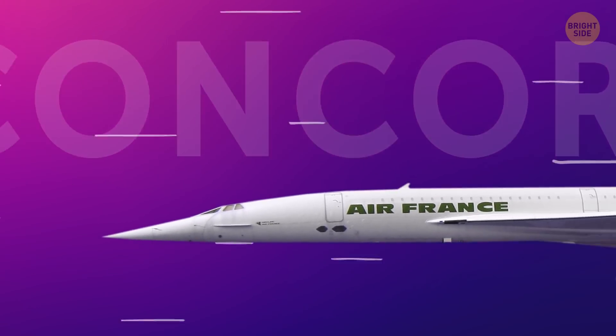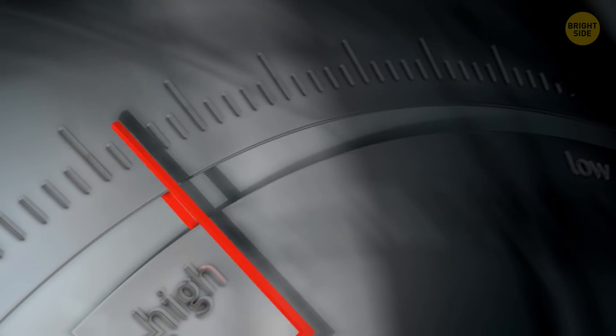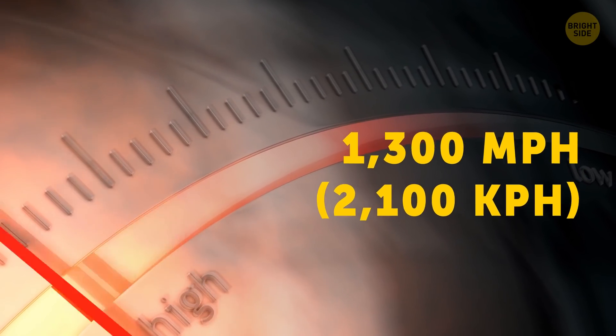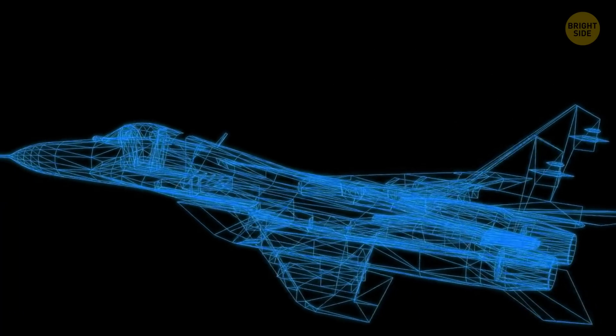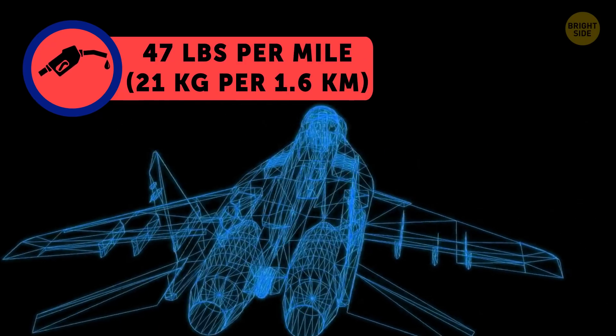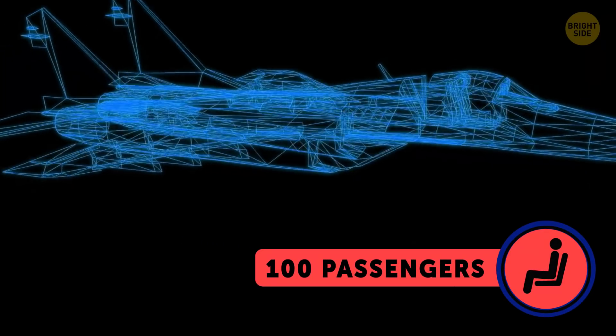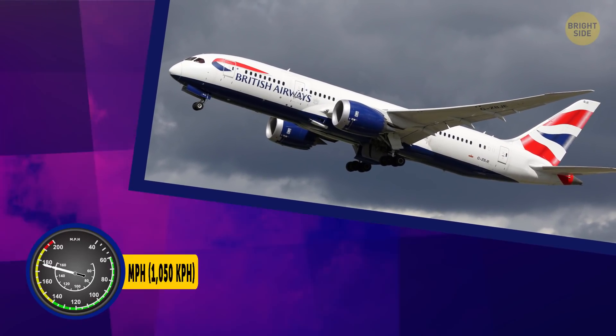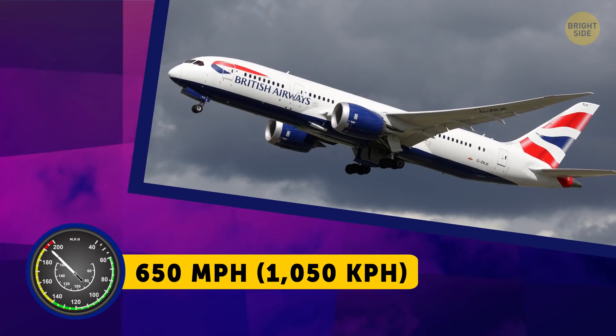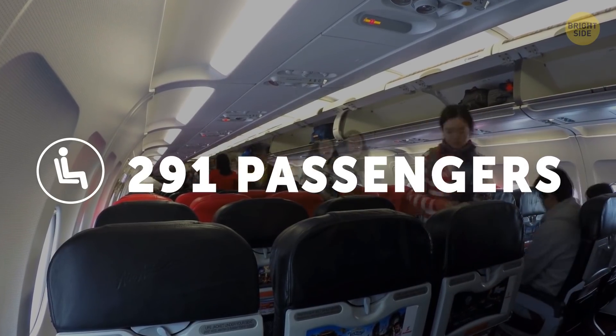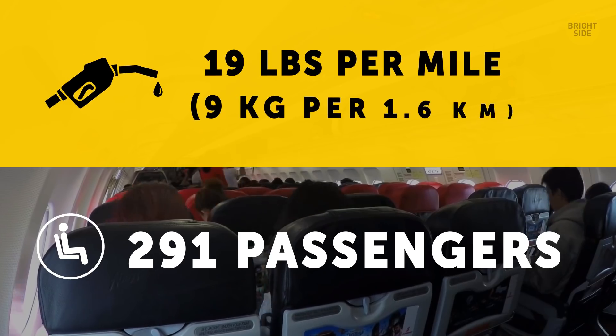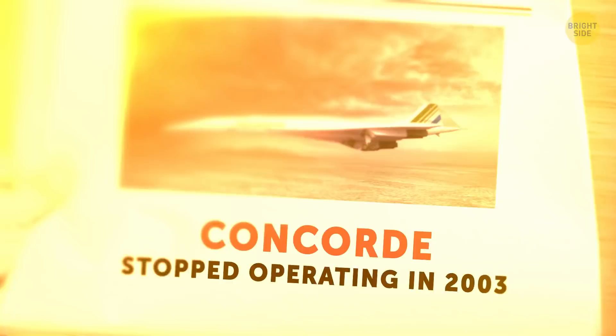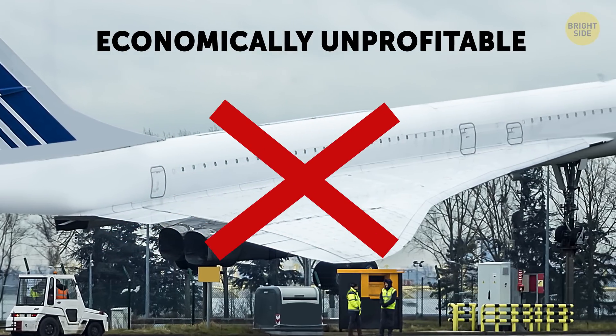The Concorde plane I mentioned earlier in the video could also accelerate to an incredible speed of 1,300 mph while flying at its cruising altitude. At the same time, it used almost 47 pounds of fuel for every mile traveled and accommodated only 100 passengers. For comparison, the Boeing 787 Dreamliner, with a cruising speed of 650 mph, can transport 291 passengers, and uses just 19 pounds of jet fuel per mile. No wonder the Concorde stopped operating in 2003. This plane was amazing, but economically unprofitable.